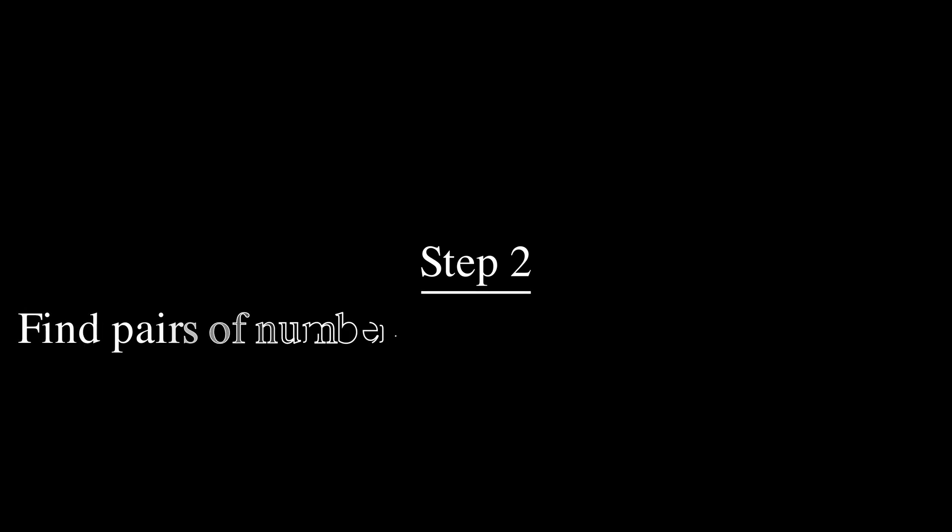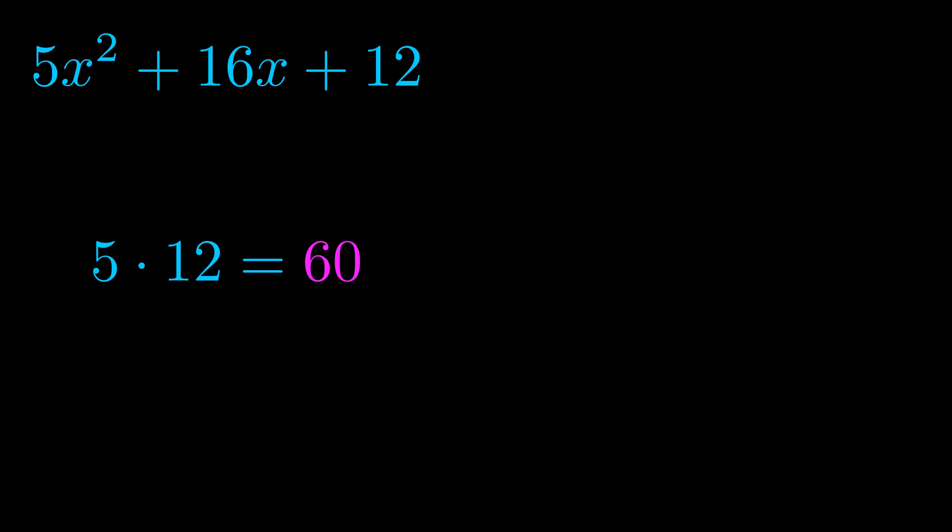Step two is to try to find all of the pairs which multiply to this number. Now it turns out you don't really need to find all of them, but go ahead and write down as many numbers as you can that multiply to the magenta value for now. Pause the video and resume when you're ready to continue.